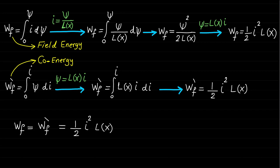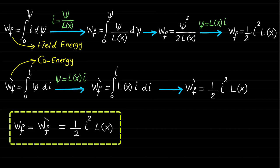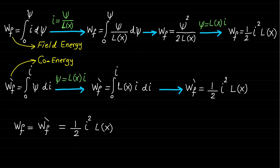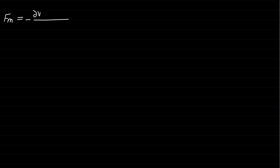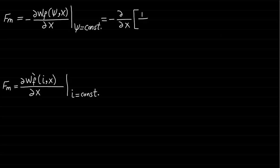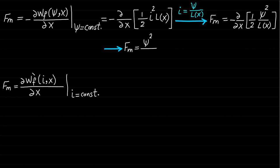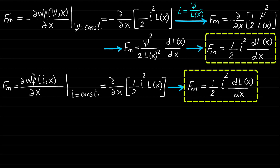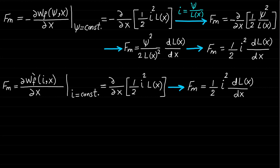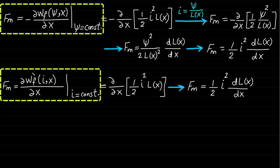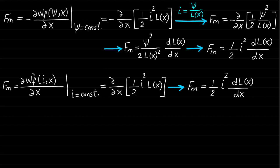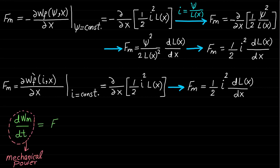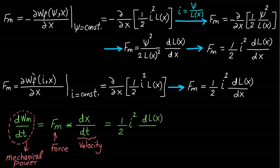Since the field energy and co-energy are known and equal to ½I²L(x), the force can be developed using either of the two force expressions. Both expressions give the same result: Fm = ½I² · dL(x)/dx. This proves that either expression can be used to develop the mechanical force, and it is a matter of user convenience which expression to choose. Note that the mechanical power is equal to the force times the velocity.